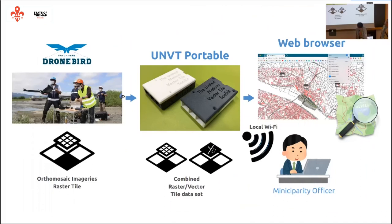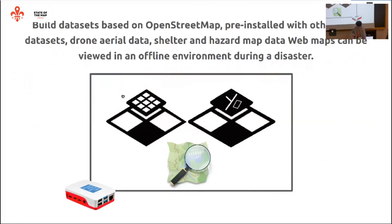After taking drone photos of a disaster, we install this web server based on the Raspberry Pi. This web server can combine the latest imagery with vector tile data. We then give this web server to municipal officers so they can view web maps in an offline environment. The data set is built based on OpenStreetMap, with area photos, shelter data, and hazard map data — all accessible as web maps in an offline environment during a disaster.